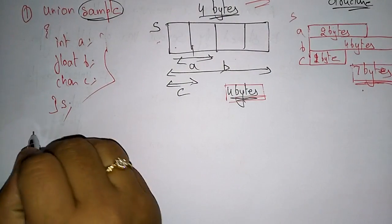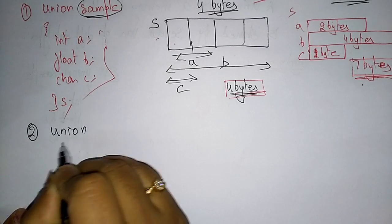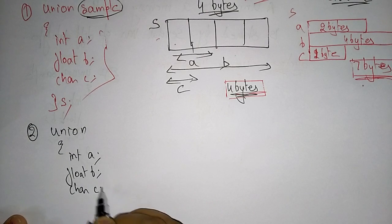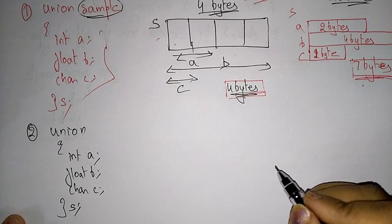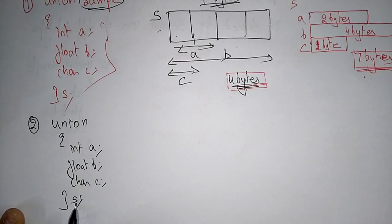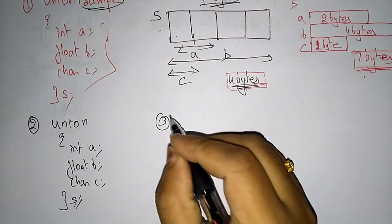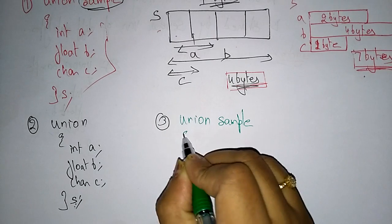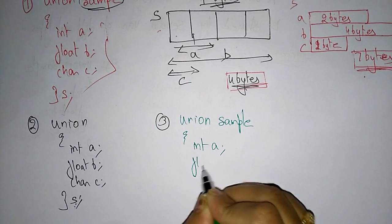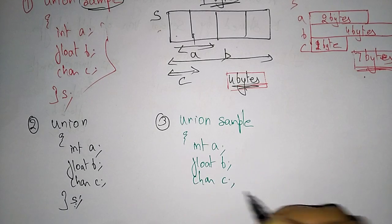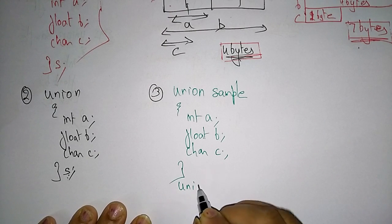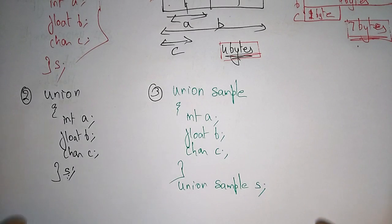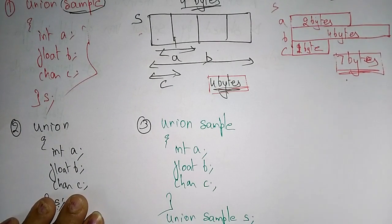This is one type of declaration. The second type is: union with int a, float b, character c, and variable s — without mentioning the union name. The third type of declaration is: union sample with int a, float b, character c, and then declare the union variable 'sample' outside the union. So these are the three ways of declaring unions.